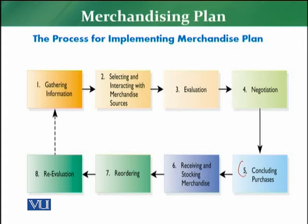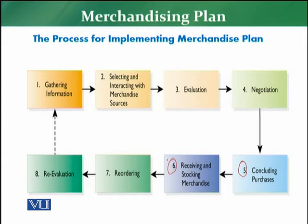Then after negotiation, we move to the fifth step, which is concluding purchases, so that the retailer knows what agreements have been finalized and what merchandise they are going to receive. The next step, the sixth, is receiving the inventories — receiving the merchandise and stocking it. After that, the seventh step is the reordering level.